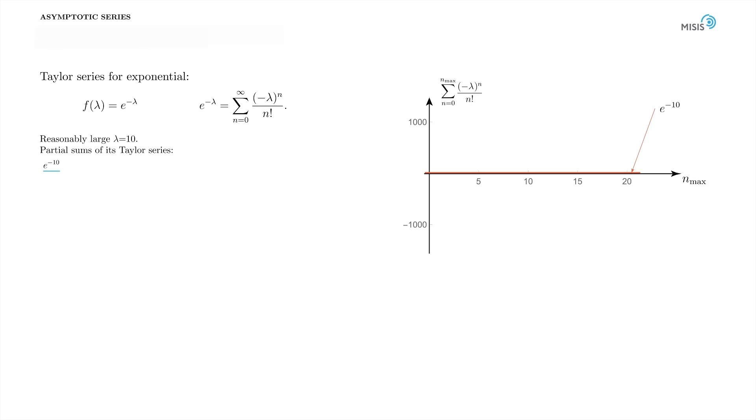So e to minus 10—it's a really small number of the order of 10 to minus 5. Here it is, the red line going close to the horizontal axis. We plot the value of the sum of one and the first non-trivial term in the expansion, which is minus 10. It is this red dot.